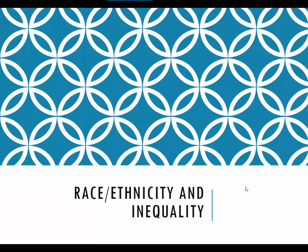Chapter 9 is on race and ethnicity and racial ethnic stratification or inequality. This is a rather lengthy chapter largely because I do add additional historical background to our discussion of the five major racial ethnic groups. That means you can expect five videos for this chapter. This is video one, which is going to introduce the concepts of race and ethnicity as well as how they are measured, particularly on the census.